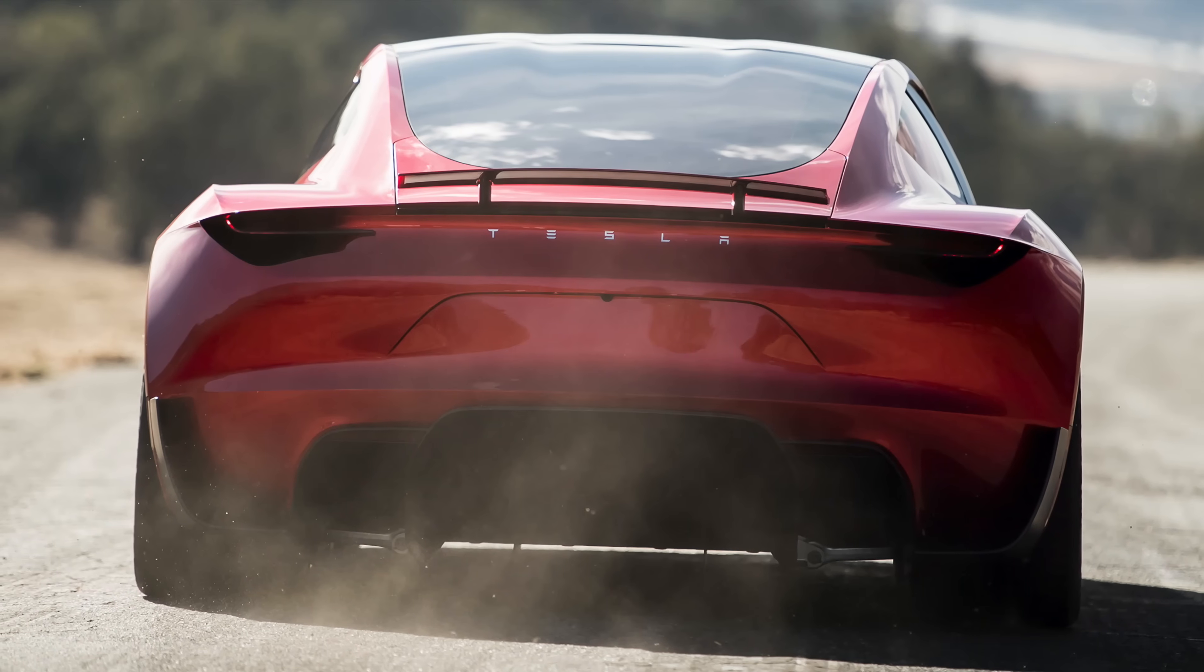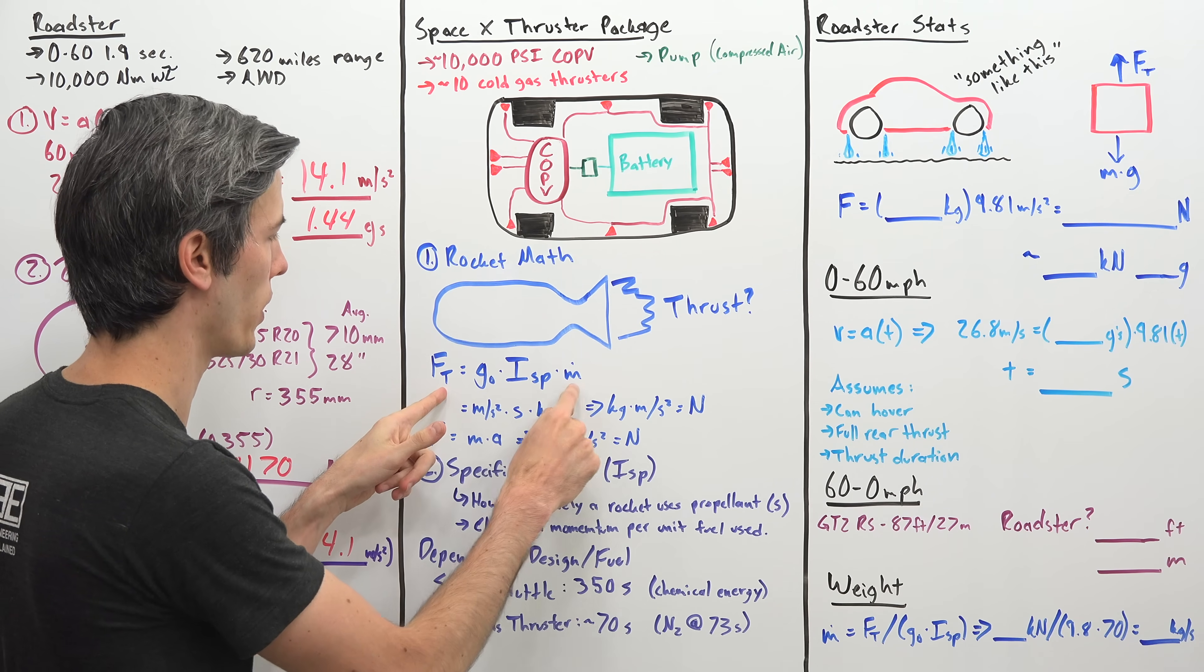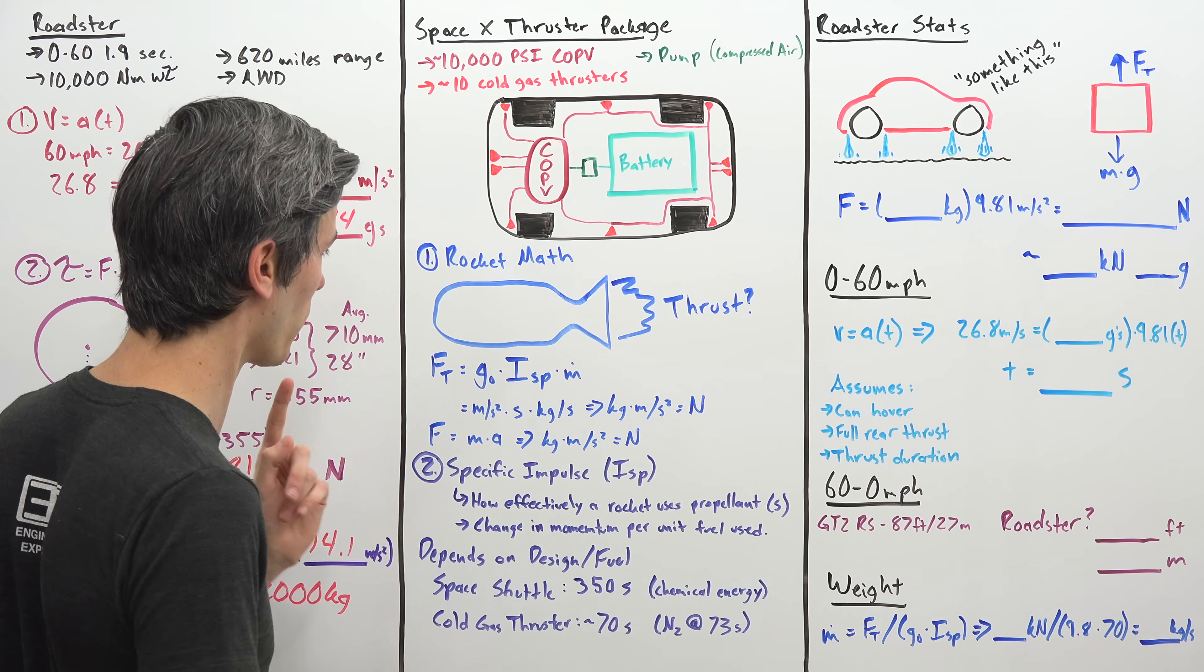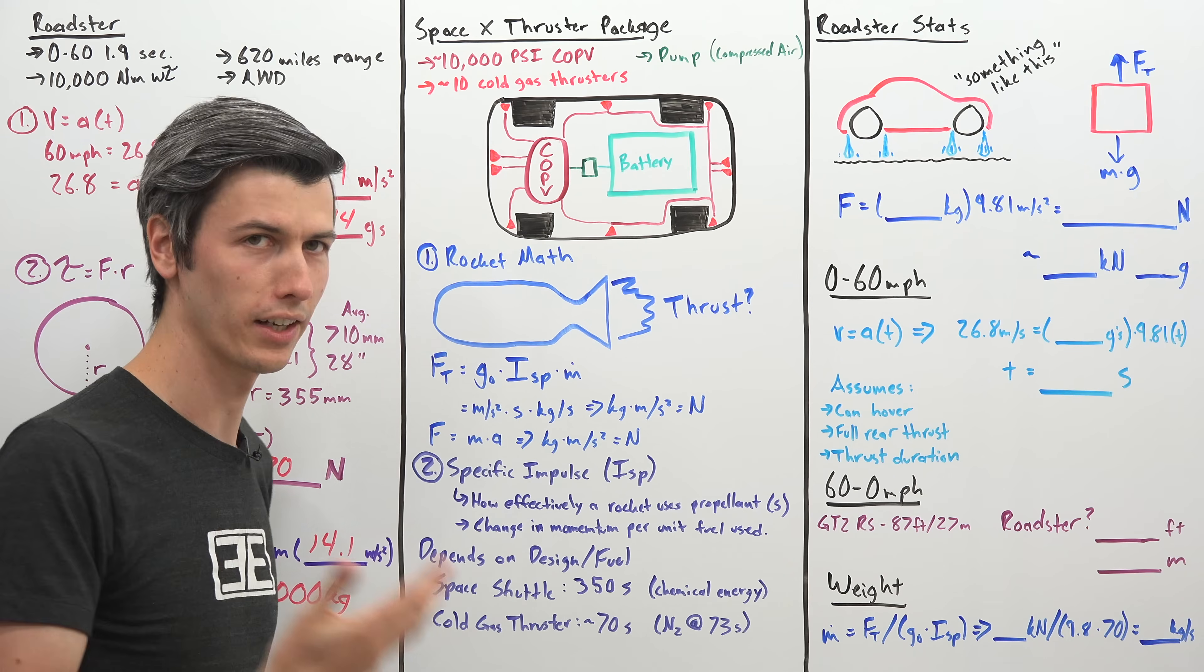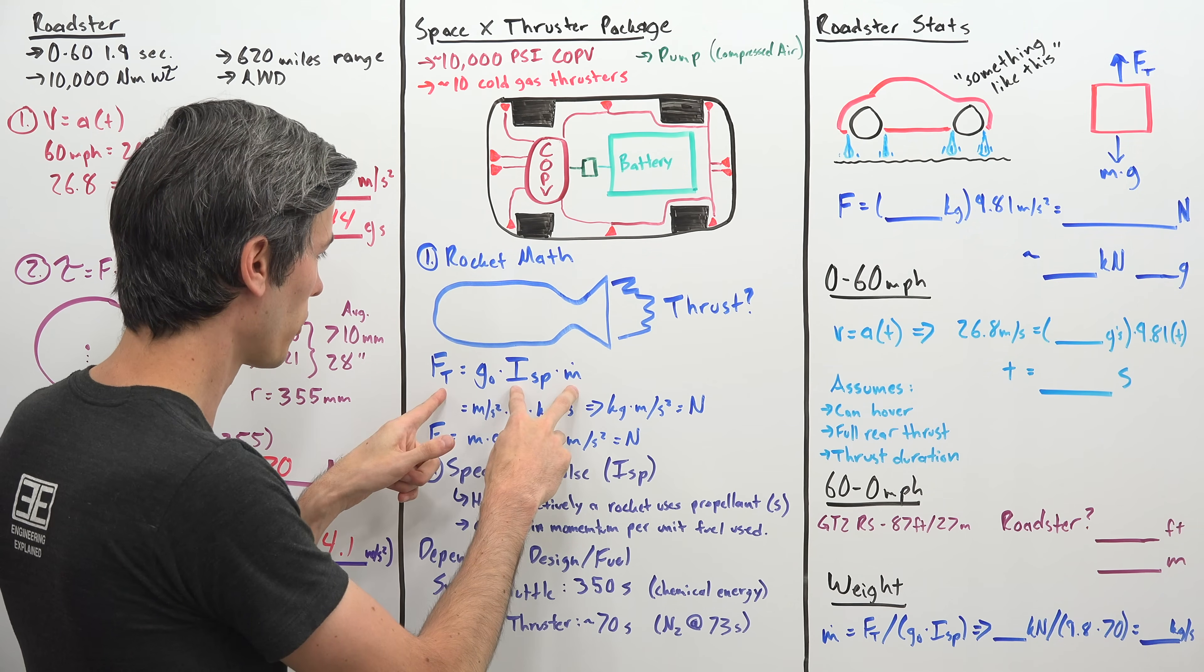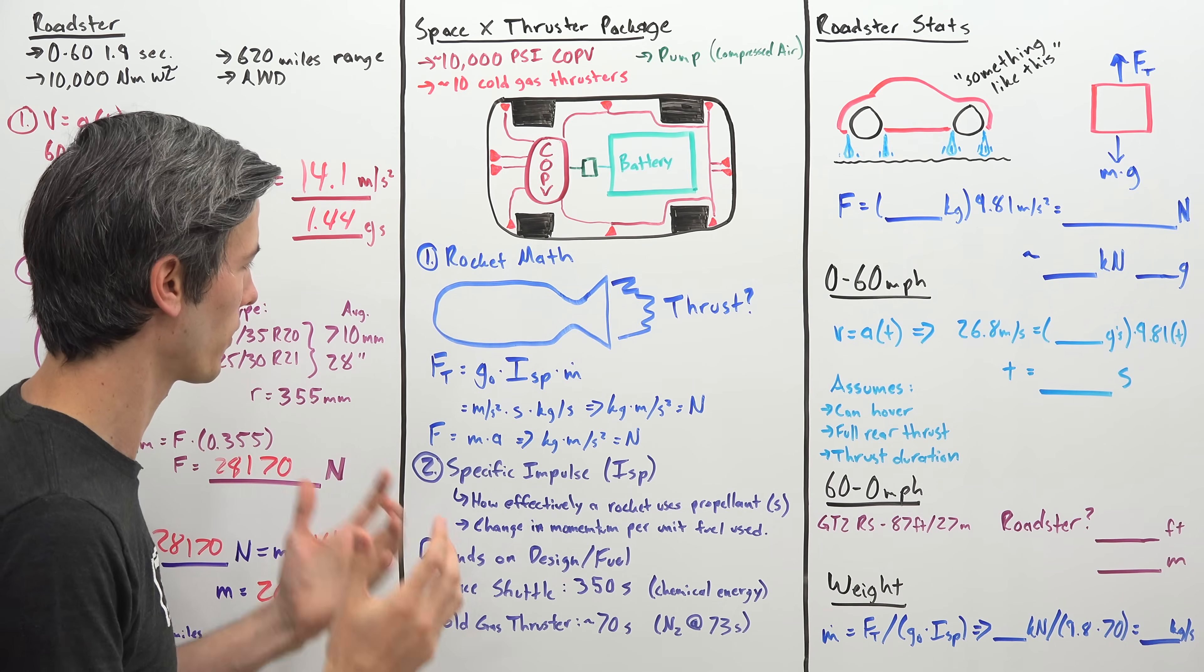Now again, we're trying to figure out how much thrust will these rockets actually create. So we have four variables here, and if we figure out any three of them, then we can determine the last one. Unfortunately, all we know is gravity. Gravity 9.81 meters per second squared. We do not know specific impulse. We don't know our mass flow rate. We don't know the force of thrust. So that's the bad news.